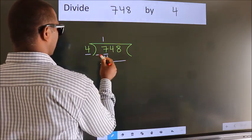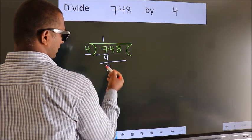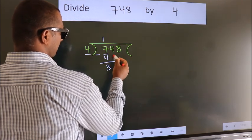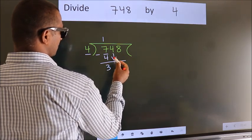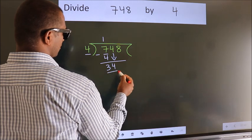Now we should subtract. We get 3. After this, bring down the beside number, so 4 down, so 34.